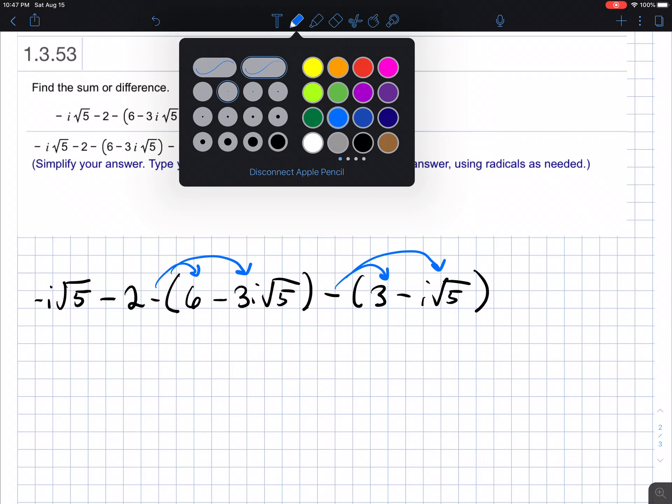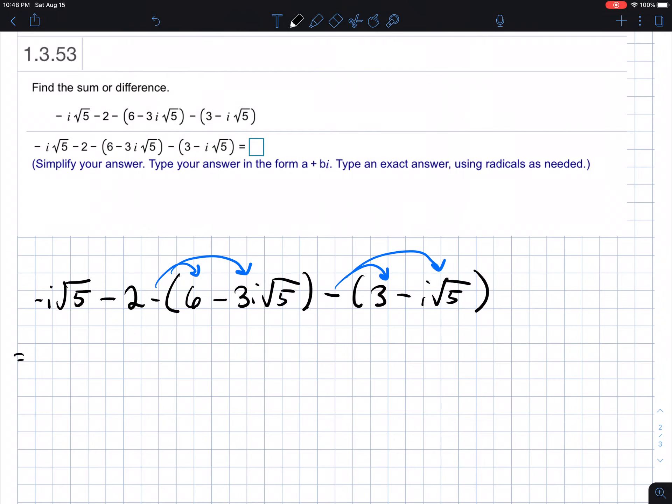So if we do this, then we get the following. This negative I root five just comes down, the minus two comes down, that becomes a minus six plus three I root five minus three plus I root five.